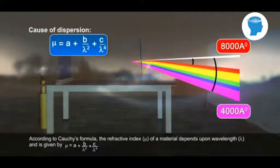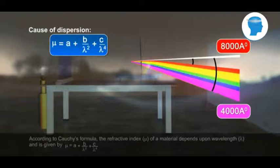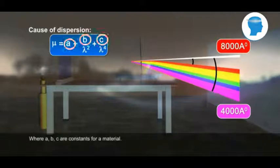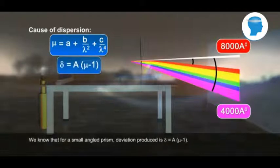According to Cauchy's formula, the refractive index μ of a material depends upon wavelength λ and is given by μ = A + B/λ² + C/λ⁴ where A, B, C are constants for a material.